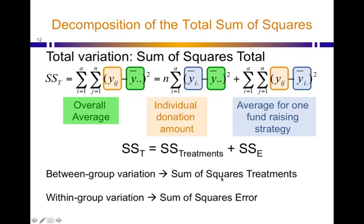Variation between groups—so between solicitation types: letter, email, telephone—is the sum of squares treatments. Variation within a certain solicitation type is that sum of squares error.